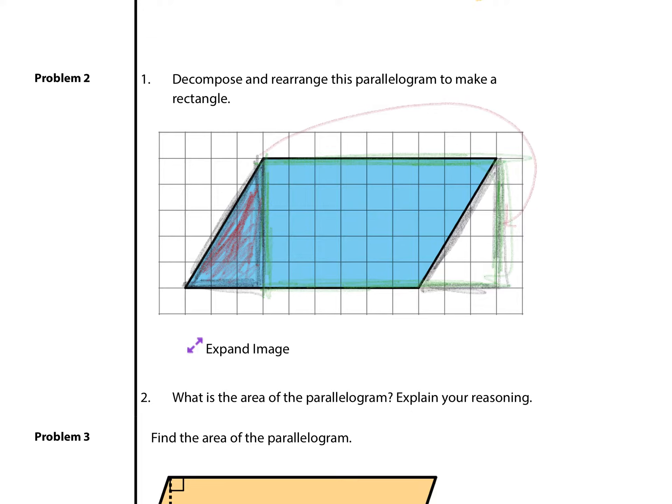That happens to be one, two, three, four, five, six, seven, eight, nine units by one, two, three, four, five units. If I wanted to find that area, not that it asked me to, but I could take five times nine to get 45 square units. Again, you didn't have to in this question, but it's a little bonus area for you there.